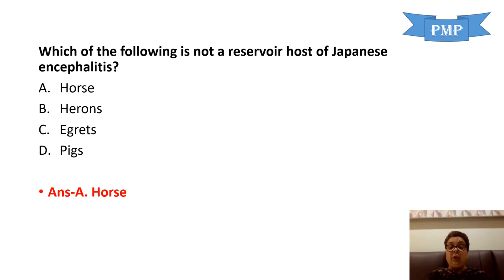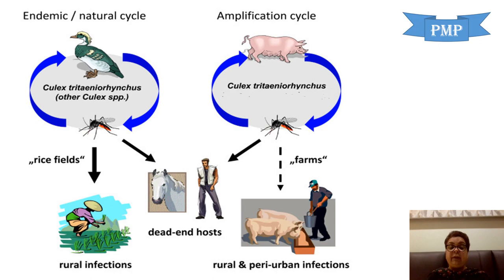The natural cycle of Japanese encephalitis occurs between aquatic birds (also called wading birds — herons, etc.) and Culex tritaeniorhynchus, and sometimes also Culex vishnoi. The amplifying cycle occurs in pigs — many-fold replication of the virus occurs in pigs. Man and horses are dead-end hosts. Japanese encephalitis belongs to the family Flaviviridae (RNA viruses). Natural reservoirs are aquatic birds — cranes, herons, egrets, and storks. Amplifying reservoir host is pigs.